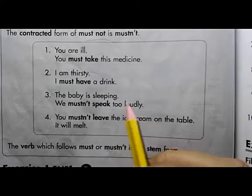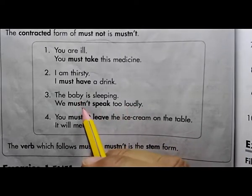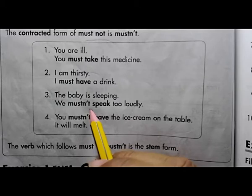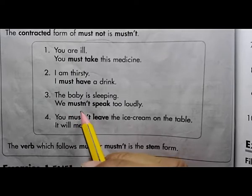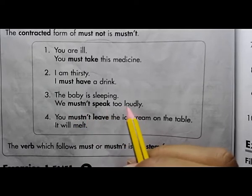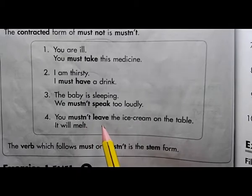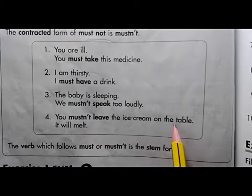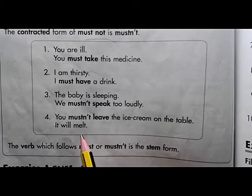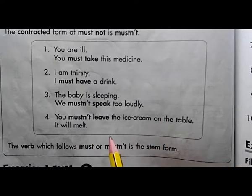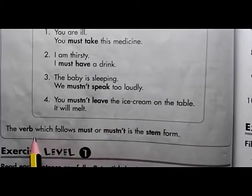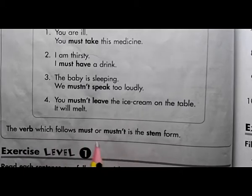Number three: the baby is sleeping — we mustn't speak too loudly. Because the baby is sleeping, if we shout or speak loudly the baby will wake up and cry, so we mustn't speak too loudly. Number four: you mustn't leave the ice cream on the table — it will melt. So you don't need to put it on the table.